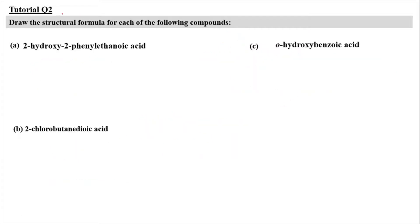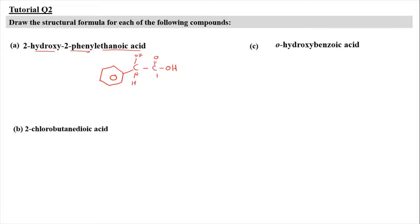Now for tutorial question 2, we have to draw the structural formula for each of the following compounds. We have 2-hydroxy-2-phenyl ethanoic acid. Ethanoic acid is our parent name, so we have C, C double bond O, O-H. This is our ethanoic acid — carbon number 1 here and carbon number 2 here. At carbon number 2, it's going to attach with a hydroxy group (O-H) and also a phenyl group (benzene ring), and the other substituent is hydrogen. So it's 2-hydroxy-2-phenyl ethanoic acid, and you can draw it as an expanded or skeletal structure.